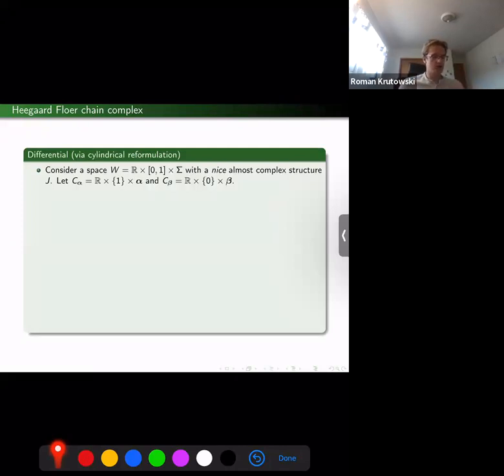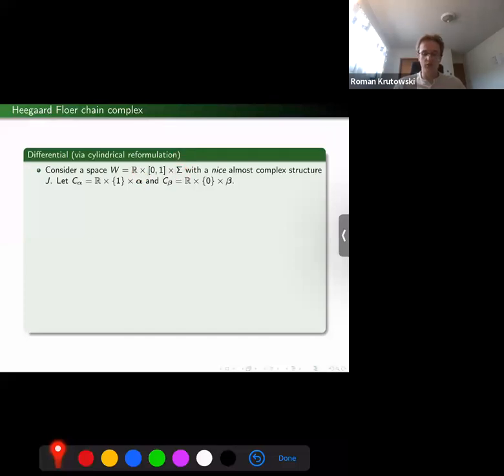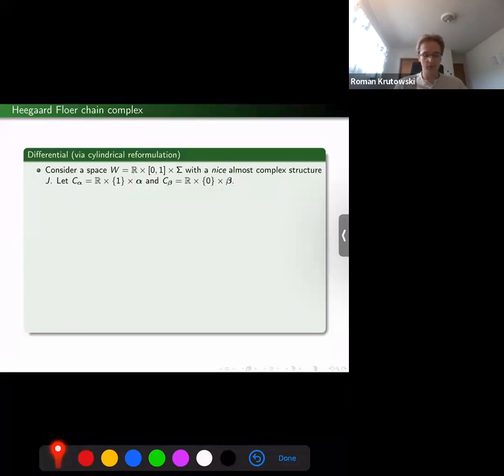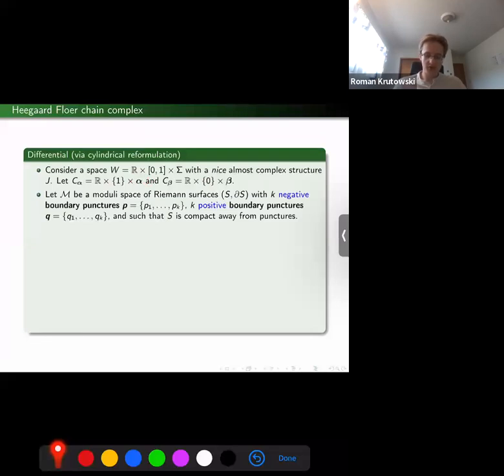Then the main question is how to compute a differential between two such generators. For this, I would describe it briefly using Lipschitz's cylindrical reformulation. We consider a strip over our Riemann surface sigma with some nice almost complex structure J, and we consider in its boundary two collections of cylinders over alpha and beta curves.